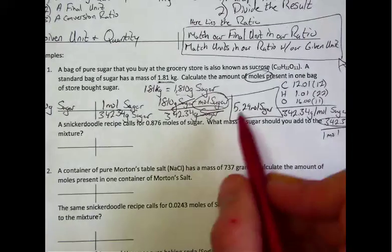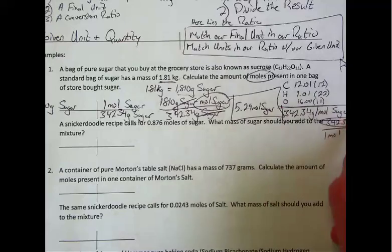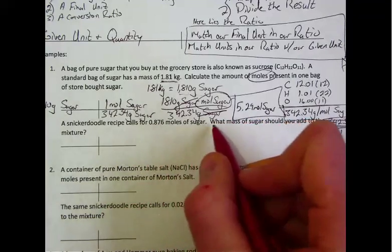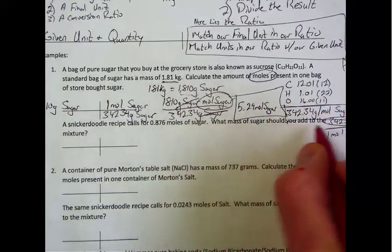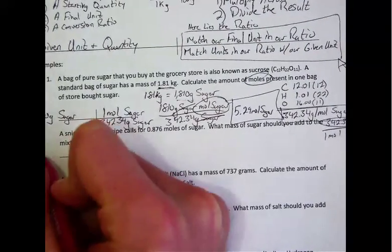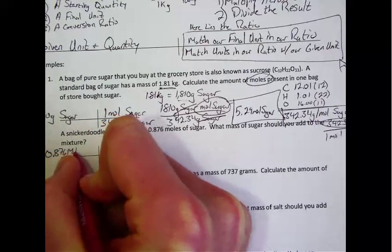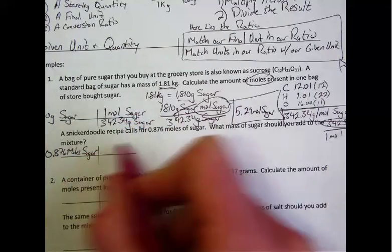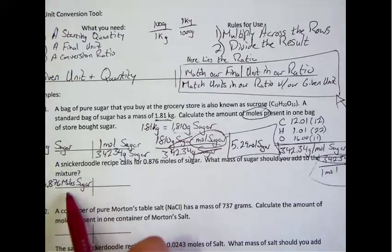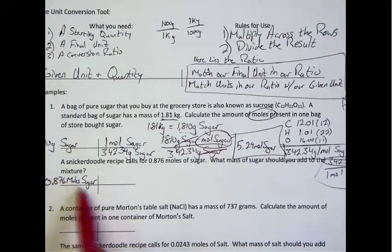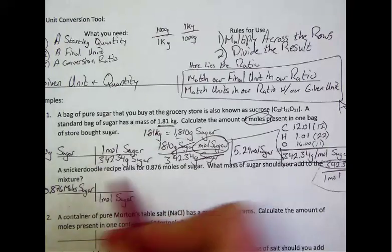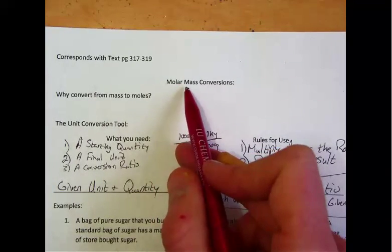All right, let's reverse it. We're going to use the same ratio for the next problem because my snickerdoodle recipe calls for 0.876 moles of sugar. Yes, my recipe calls for moles. What mass of sugar should you add to the mixture? So in the top left-hand corner, I put my given unit, which is 0.876 moles. And again, make sure that you write the unit in its entirety, moles of sugar. Now, I don't know which ratio to use without looking at what I'm given first. I notice I'm given moles, so diagonally across, in order to match units, I need to put one mole of sugar at the bottom right-hand corner. Again, this is always our conversion ratio when we're going back and forth from moles to mass and mass to moles.